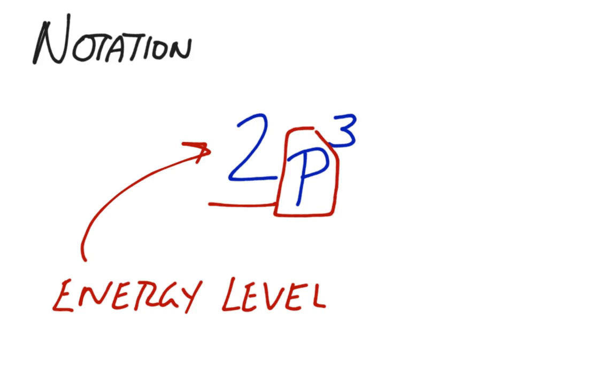The second component that we have is the letter. The letter is the shape of the orbital. As we discussed in our previous lesson, there are different shapes depending on different movement of the electrons and that corresponds to their wave functions. The third and final component is the exponent. The exponent is the number of electrons in that particular energy level and orbital.